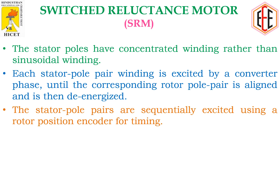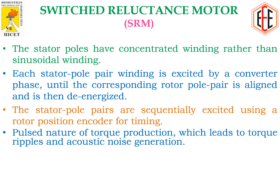The stator pole pairs are sequentially excited using a rotor position encoder for timing. The SRM is used in a closed loop, so we need a rotor position sensor (RPS). That sensor reads the position information and passes it to the controller, which decides which stator poles are to be excited based on the feedback devices.